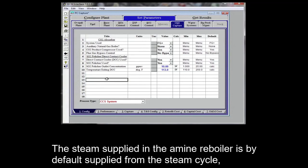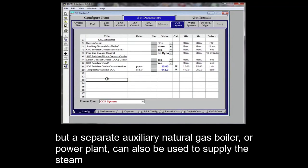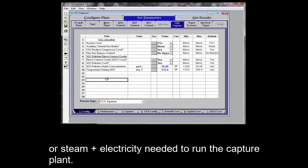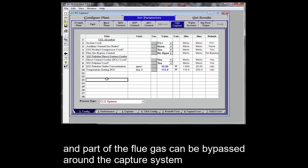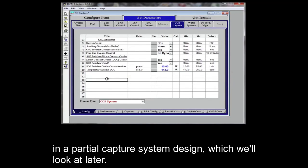The next few parameters provide additional design options. The steam supplied in the amine reboiler is, by default, supplied from the steam cycle. But a separate auxiliary natural gas boiler or power plant can also be used to supply the steam or steam plus electricity needed to run the capture plant. Likewise, CO2 compression can be included either inside or outside the plant boundary, and part of the flue gas can be bypassed around the capture system in a partial capture system design, which we'll look at later.